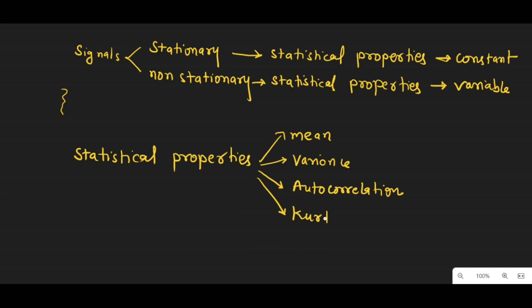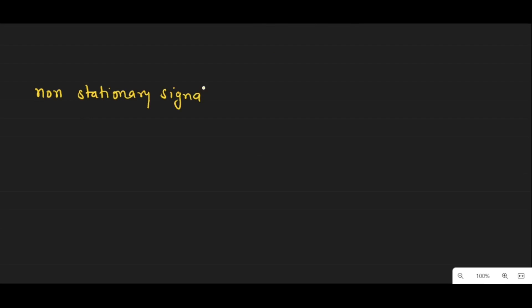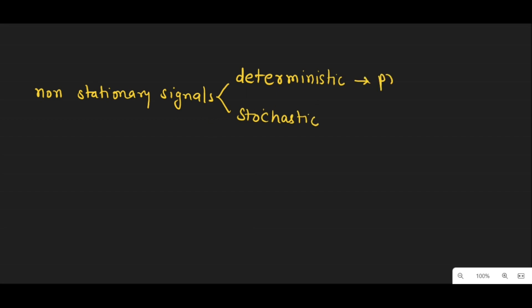Stationary signals are often used in signal processing applications because they are relatively easy to analyze and manipulate. On the other hand, a non-stationary signal is a signal whose statistical properties change over time. Non-stationary signals can be classified into two main types: deterministic and stochastic. Deterministic signals are those whose properties change predictably over time, such as a sine wave whose frequency changes slowly over time.